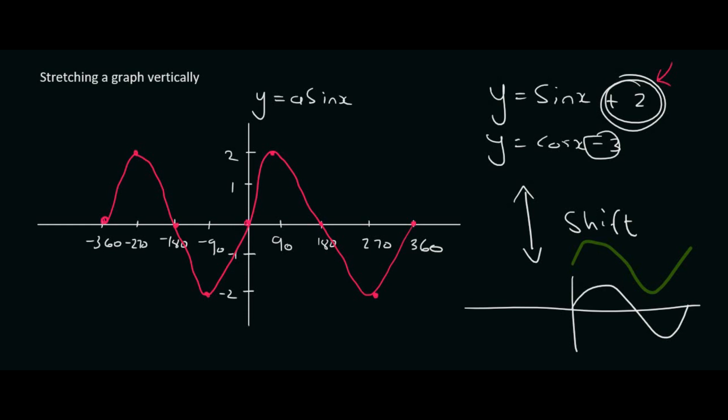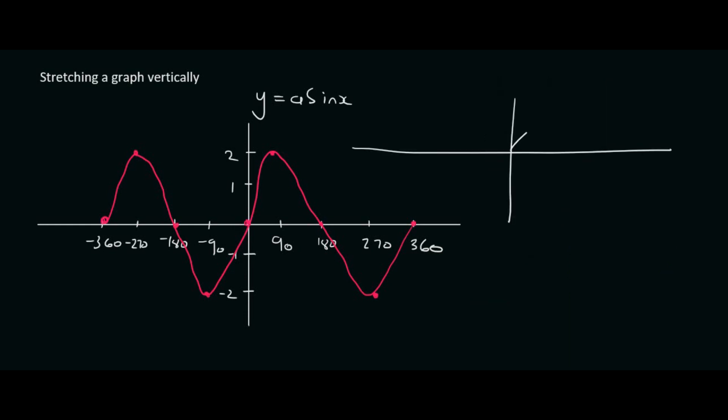So what I mean by that is the following. A normal sin graph goes up to 1 and down to minus 1. If I stretch the graph, then I could do this. Notice I took this piece and pulled it upwards, but then I took this piece and pulled it downwards. So I didn't move everything up.